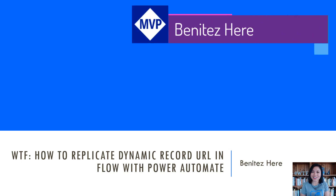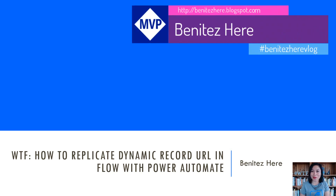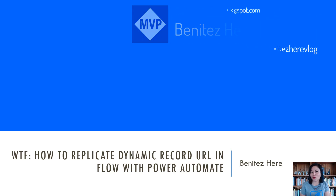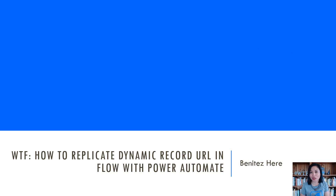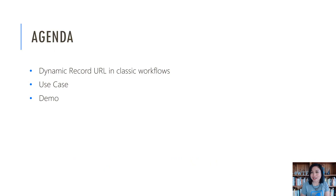Hi everyone, it's Benitez here. Welcome back to my YouTube channel. In today's WTF episode, I'm going to share with you all how you can replicate creating a dynamic record URL in flow with Power Automate. For the agenda today, I will do a quick recap of what we can do in classic workflows, then talk about the use case for this demo, and then we're going to dive straight into it.